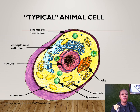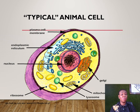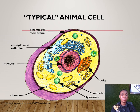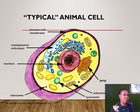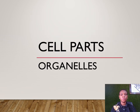A typical animal cell has a cell membrane and several internal organelles. These include the plasma membrane on the outer part, the endoplasmic reticulum, the nucleus, the ribosome, the lysosome, the mitochondria — said to be the powerhouse of the cell — and the Golgi bodies. These are the essential components of any eukaryotic cell that you must know.